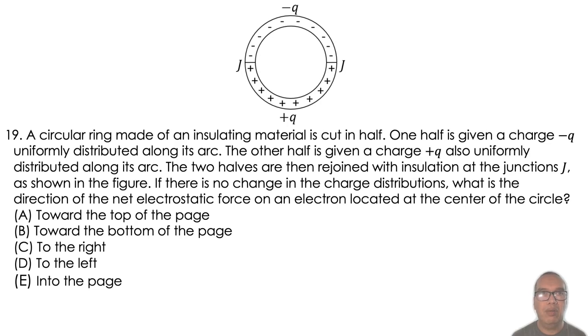A circular ring made of an insulating material is cut in half. One half is given a charge negative Q uniformly distributed along its arc. The other half is given a charge positive Q also uniformly distributed along its arc. The two halves are then rejoined with insulation at the junction J as shown in the figure.